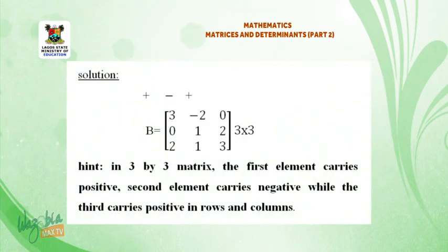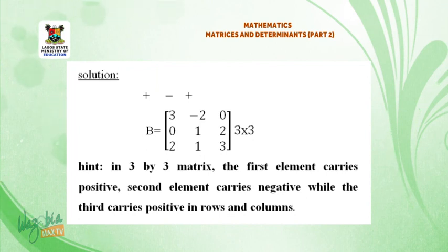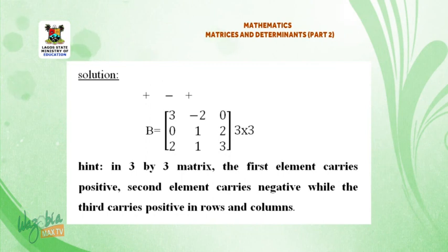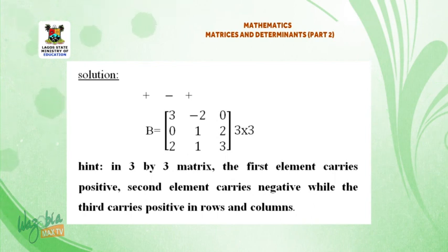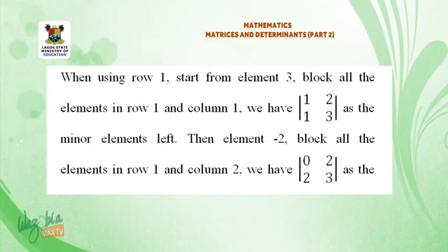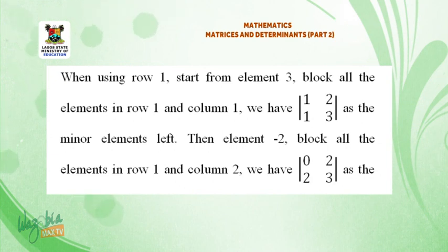Solution. B equals: 3, minus 2, 0, 0, 1, 2, 2, 1, 3. Hint: in a 3×3 matrix, the first element carries positive, the second element carries negative, while the third carries positive, in rows and columns. When using row 1, start from element 3. Block all the elements in row 1 and column 1 — we have 1, 2, 1, 3 as the minor elements left.